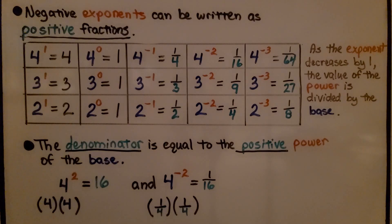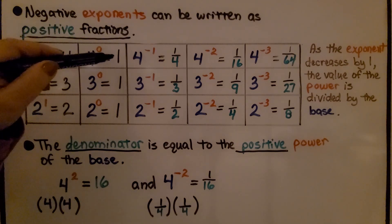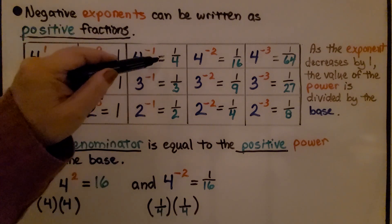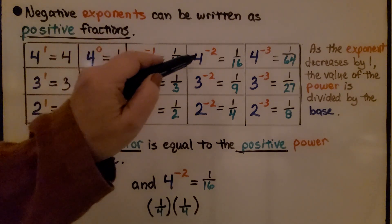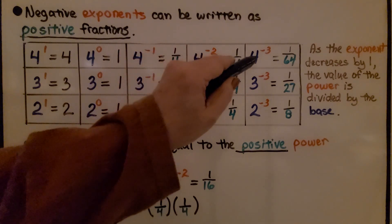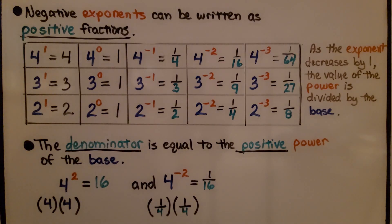Negative exponents can be written as positive fractions. 4 to the first power is equal to 4. 4 to the 0 power is equal to 1. And if we do 4 to the negative 1, it's going to equal a positive fraction of 1 fourth. 4 to the negative 2nd power is 1 sixteenth. And 4 to the negative 3rd power is equal to 1 sixty-fourth. As the exponent decreases by 1, the value of the power is divided by the base.